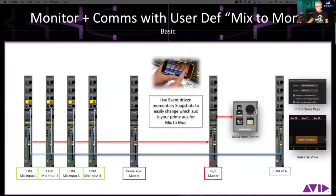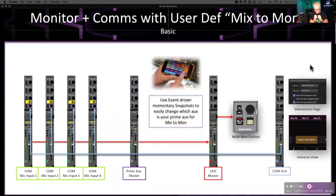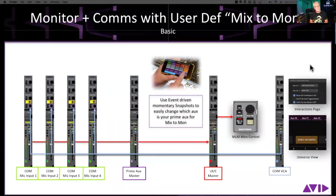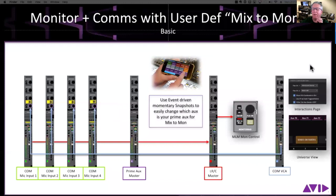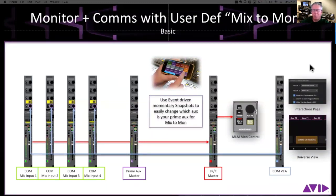Brad asks: does the S6L not have aux master volumes? It does have an aux master, but the VCA trim is not the same thing. If I turn down an aux master, that's a master volume for where those faders are sitting — just a master volume for that output. If I have a VCA assigned to specific inputs within that aux — not all of the inputs — I can have four, five, six, ten different VCAs controlling different families within that aux. It's a more granular approach than an aux master.